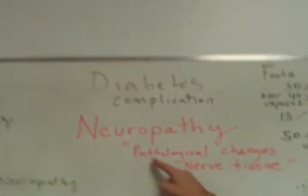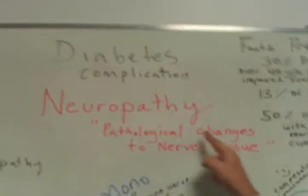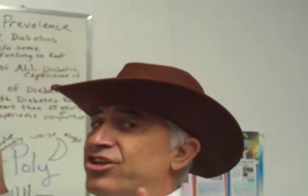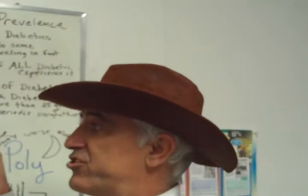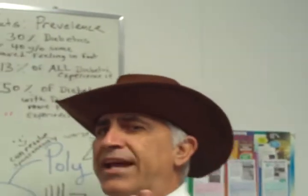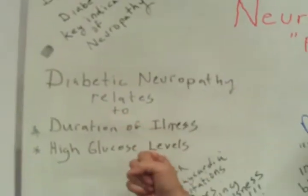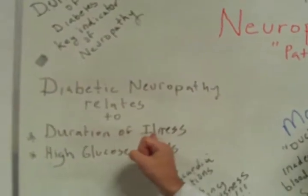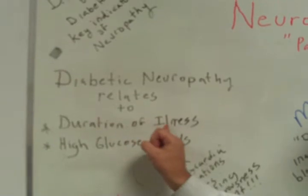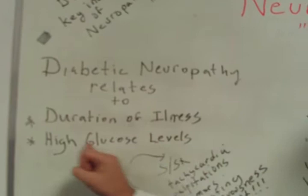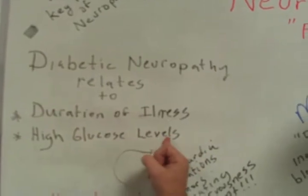What is a neuropathy? Pathological changes to nerve tissue. Diabetic neuropathy can be related to how long you've been a diabetic — duration of illness — and having consistently high glucose levels above normal.